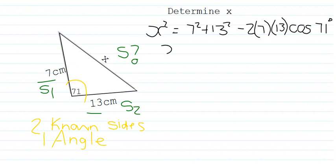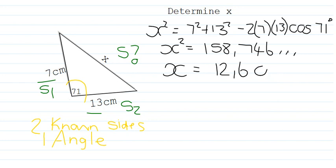When you simplify this, x squared is going to be equal to 158.746. And taking the square root of x now will give you 12.6 centimeters. And this is the size of that side x.